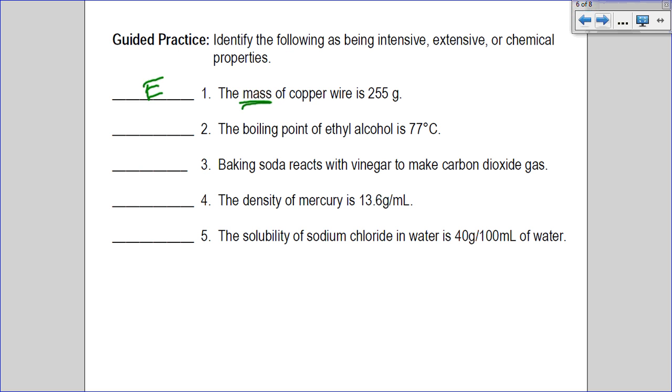Number two, the boiling point. Boiling point is an intensive property. Ethyl alcohol is 77 degrees Celsius. All ethyl alcohol, no matter where you are on the planet, will boil at 77 degrees Celsius. Of course, there's a few exceptions, but we won't get into those now. So you can use that boiling point of alcohol at 77 degrees to identify what an unknown might be.